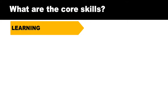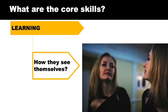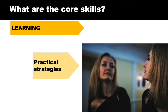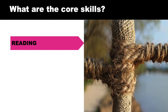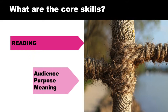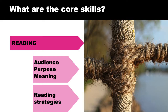The first skill of learning is very much about how a person sees themselves as a learner, the planning and the management of their learning, and the practical strategies they have to assist their learning. Reading has two core strands: the audience, purpose and meaning making strand, and the actual reading strategies of text navigation or sounding out.